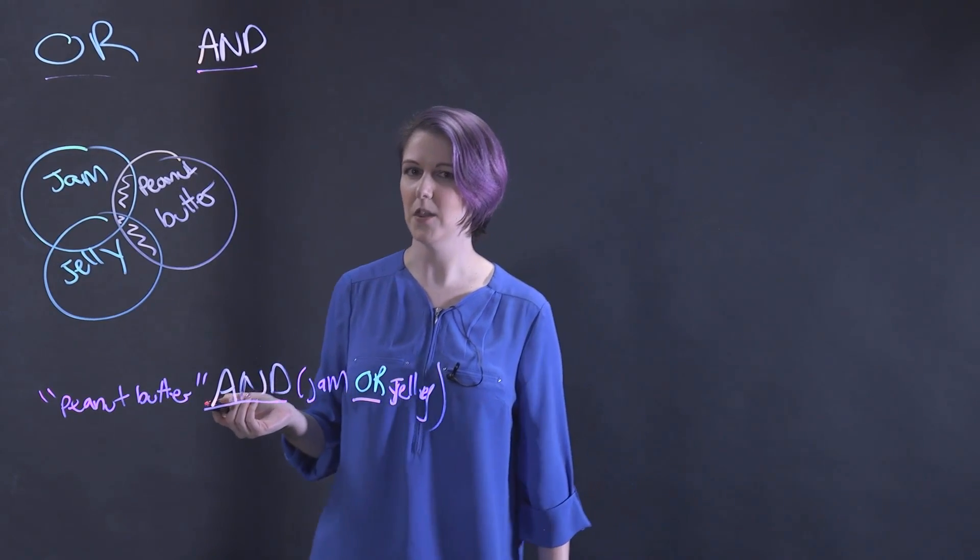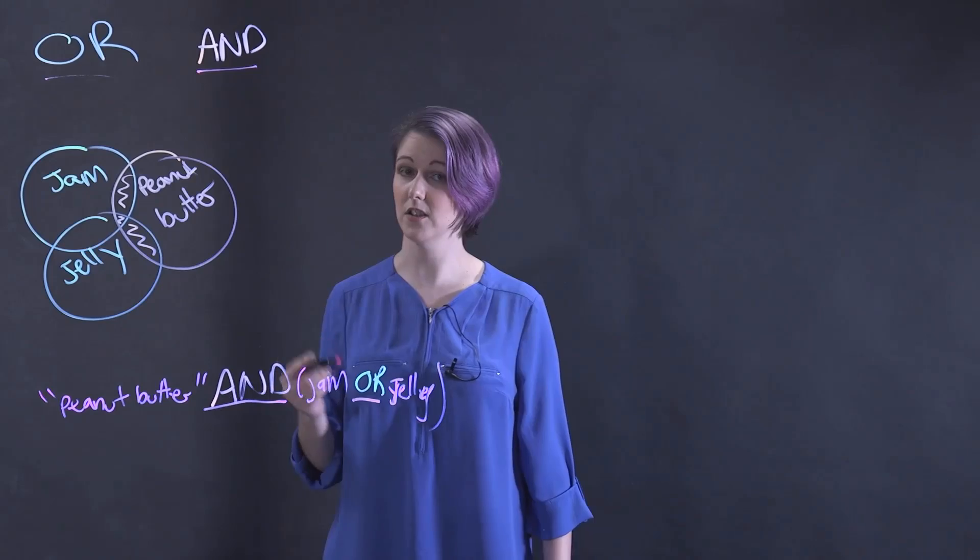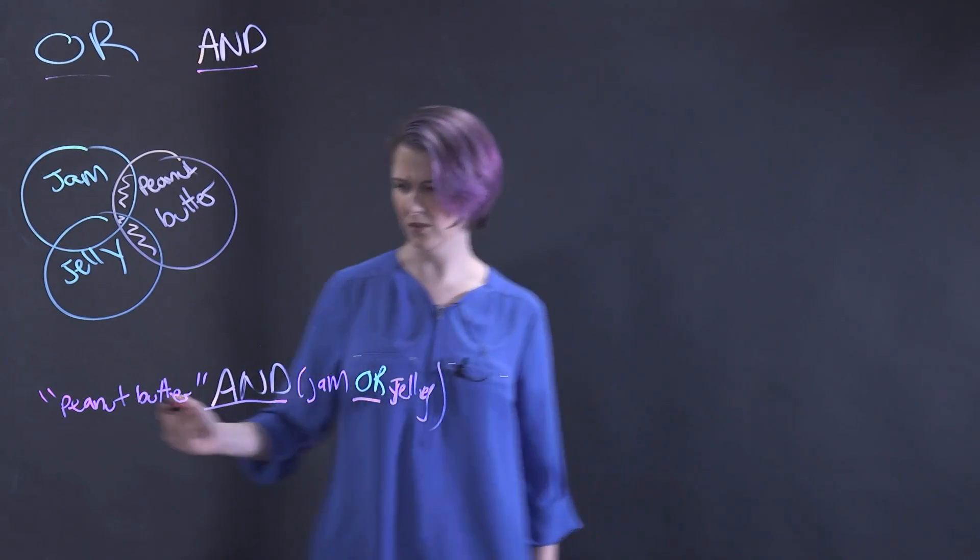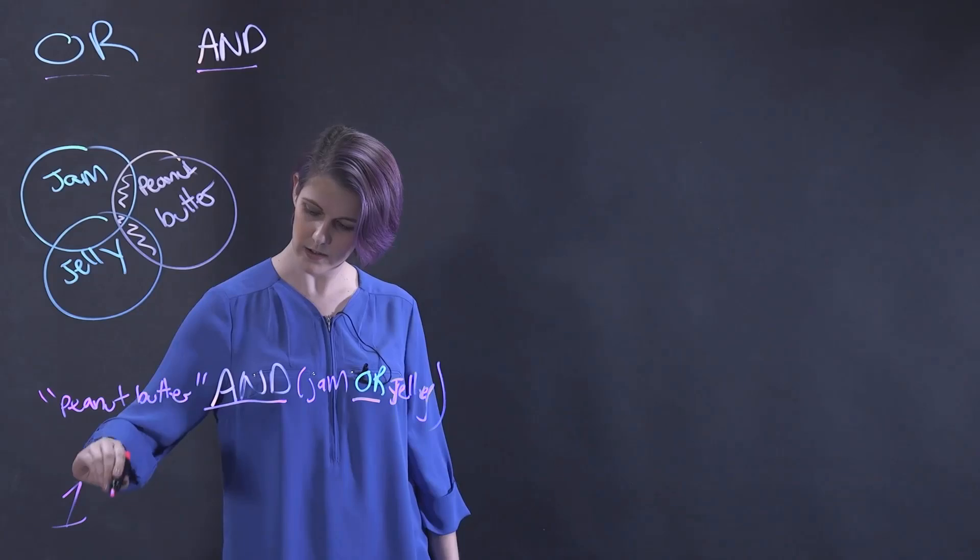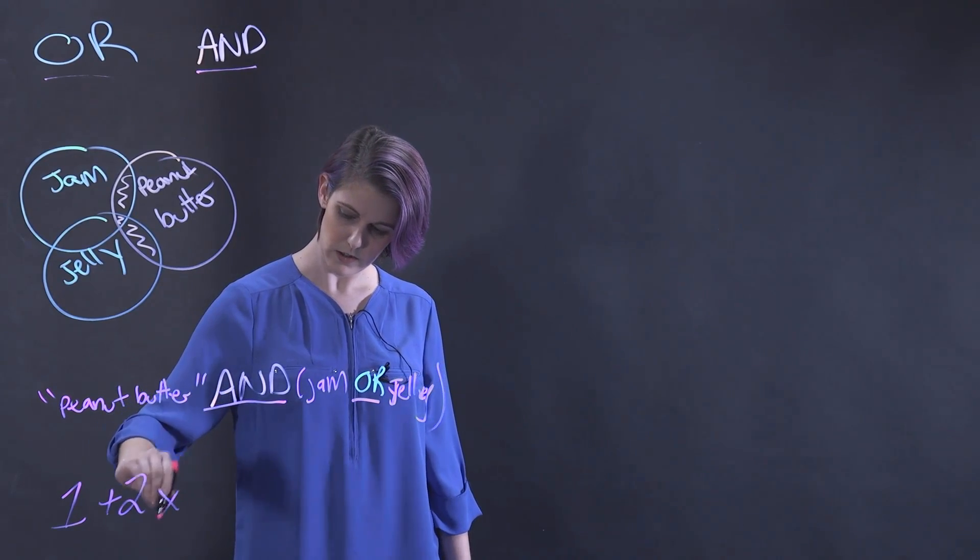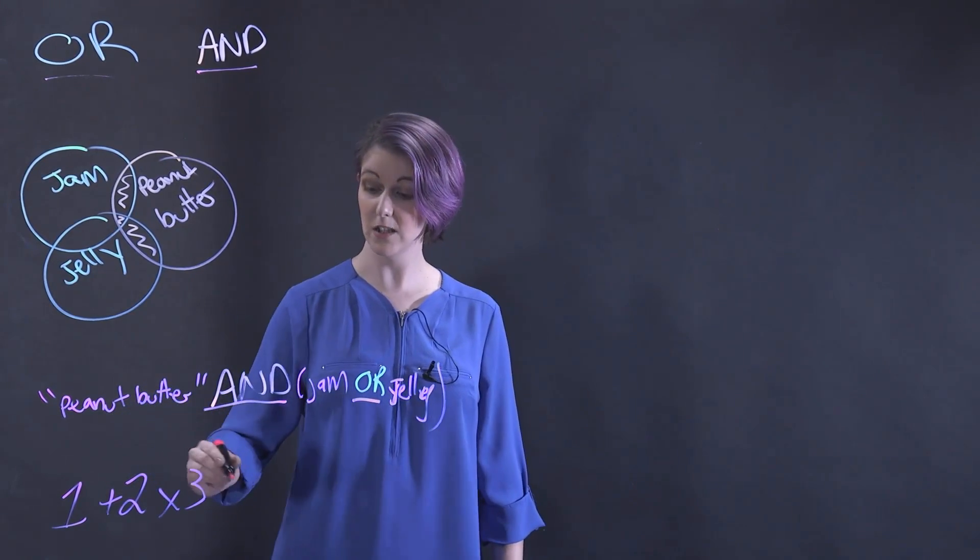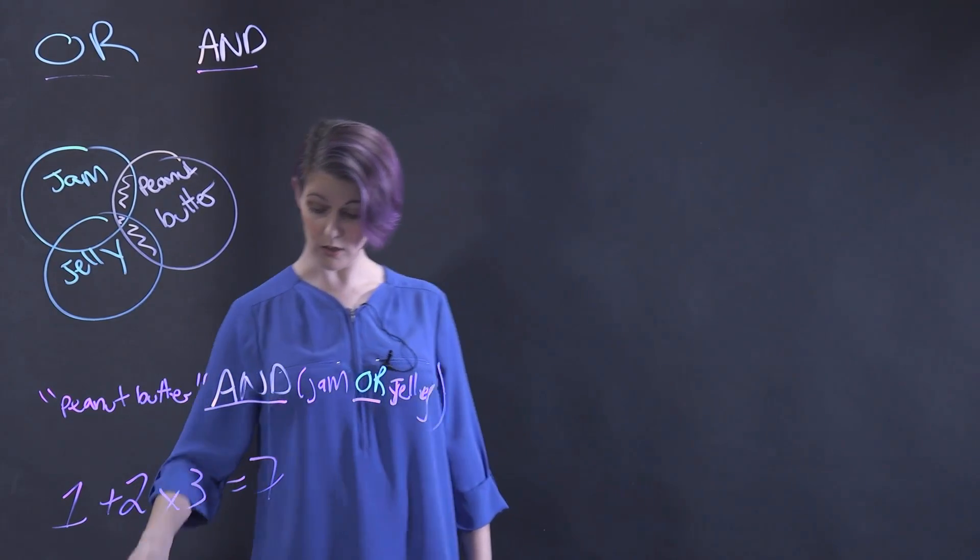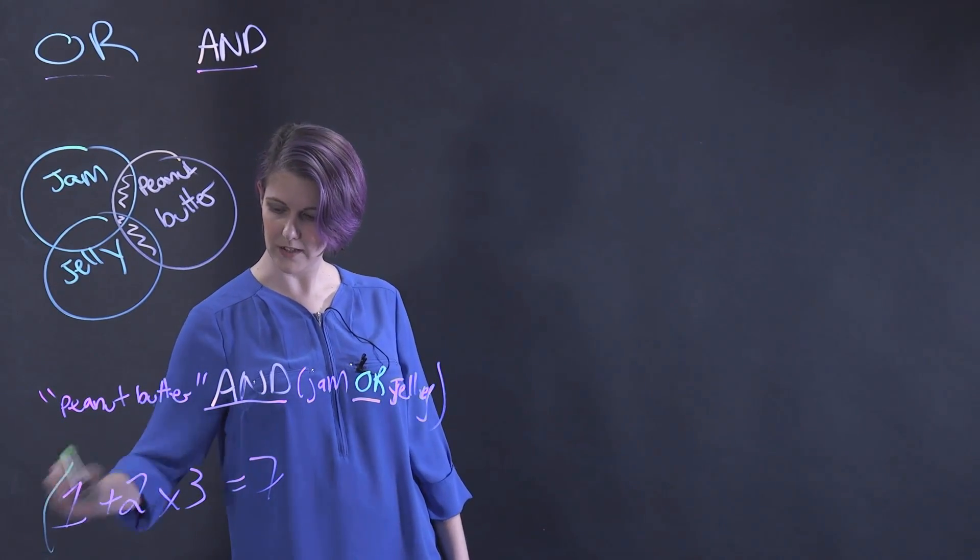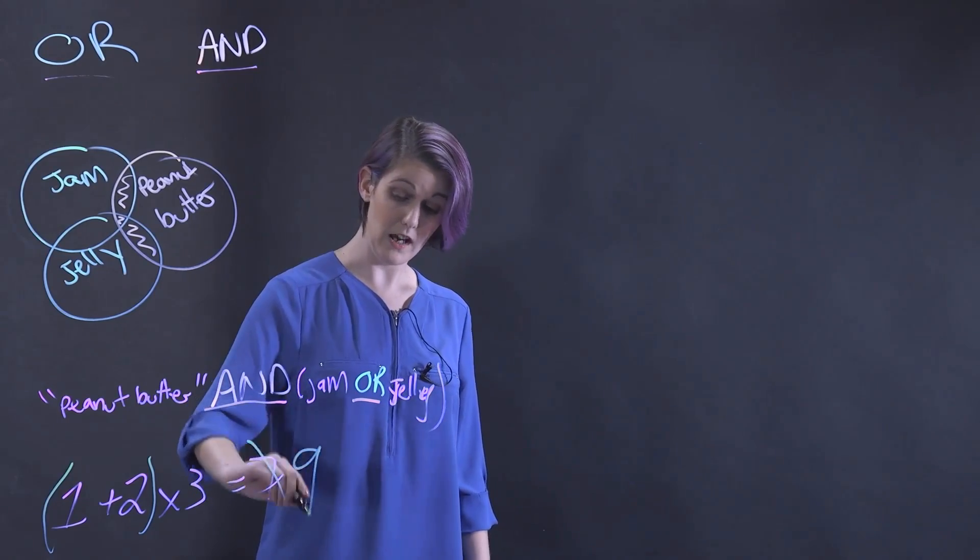This is similar to how mathematical equations work, where the results depend on where you put the brackets. For example, if you have 1 plus 2 times 3, this can equal 7. Or, if you put brackets around 1 plus 2, it can actually equal 9.